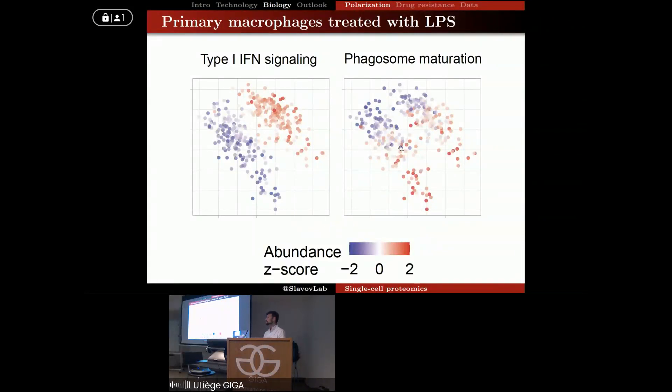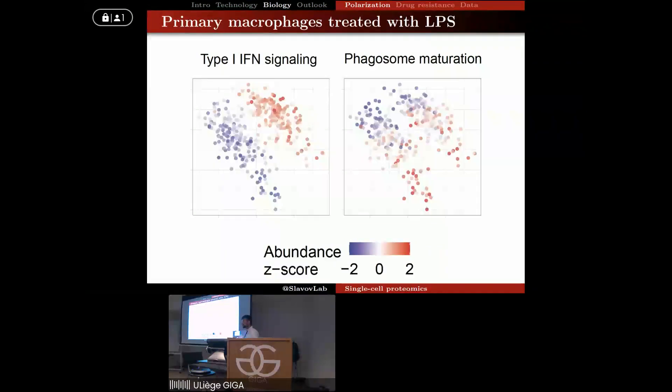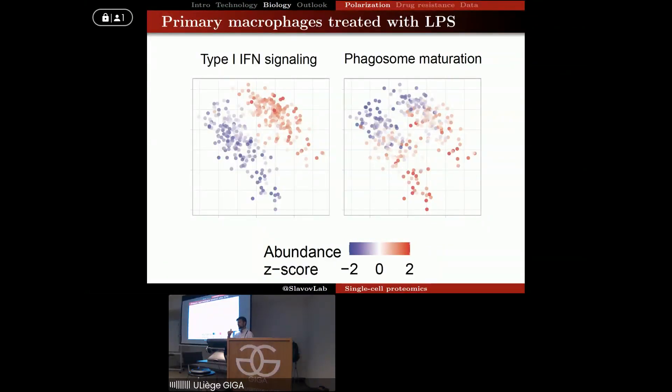But now if you look at phagosome maturation, you see a very different picture, where the variability, the heterogeneity, is not between the conditions but it's within a condition. Both the untreated and the treated cells have some cells that have more phagosome maturation proteins and some that have less.